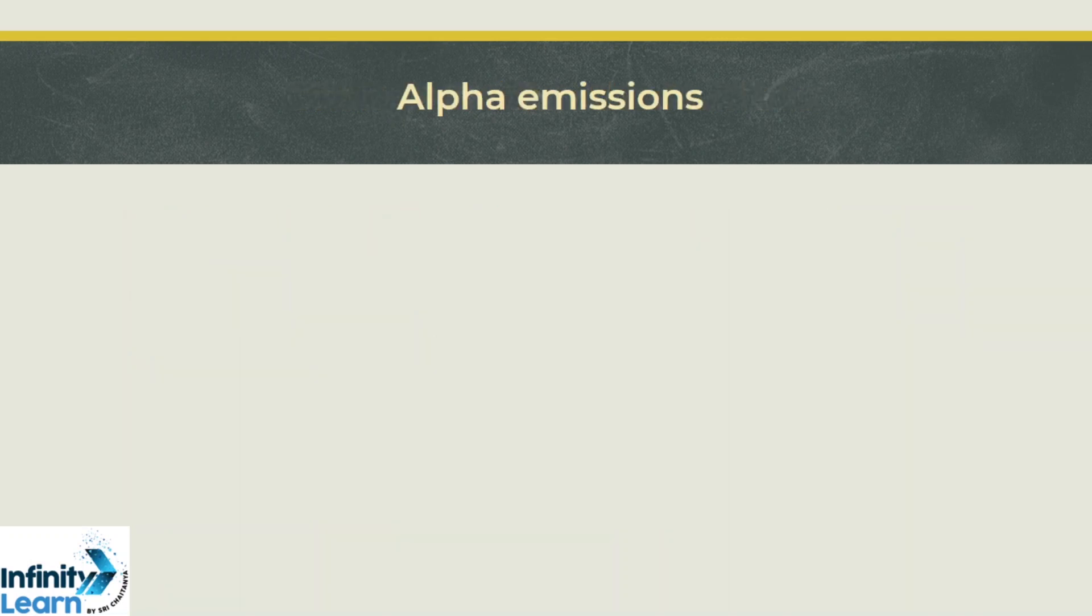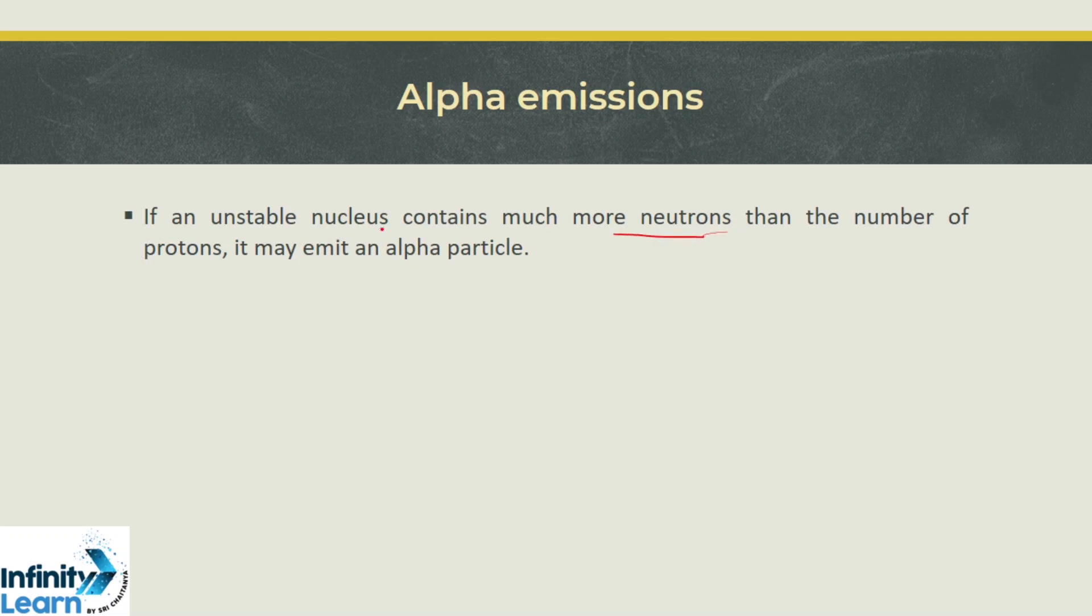Let us discuss alpha emissions. If an unstable nucleus contains much more neutrons than the number of protons, it may emit an alpha particle.